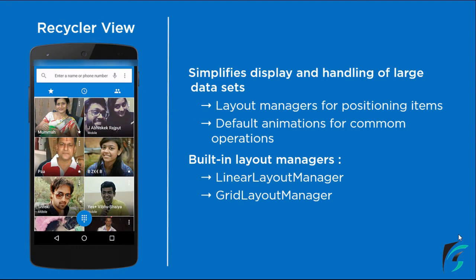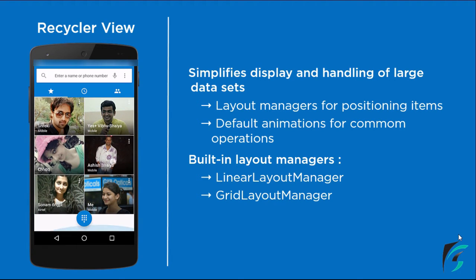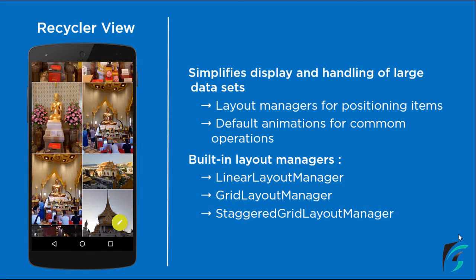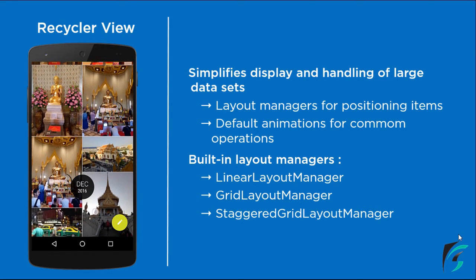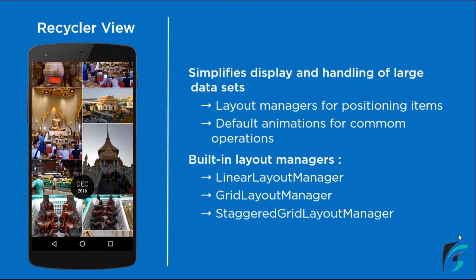Next comes the GridLayoutManager. On the left side of the screen, you can see the speed dial provided by the Android device — this is the GridLayoutManager. In this layout, each item is in the form of a grid and it is uniform, showing items in a grid-like structure. Next comes the StaggeredGridLayoutManager, which shows items in a staggered grid. You can see the gallery which provides this layout. Each item in the StaggeredGridLayoutManager is not uniform — it is of different heights, unlike the GridLayoutManager.